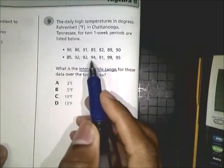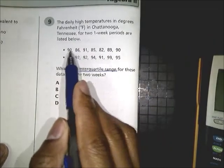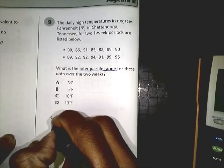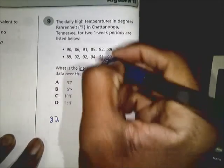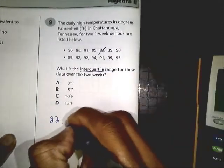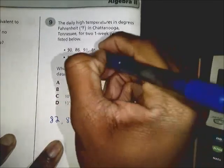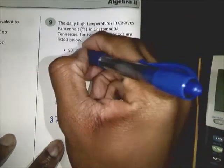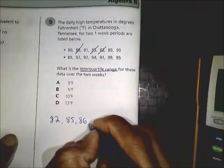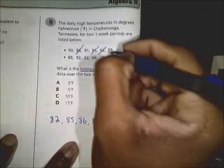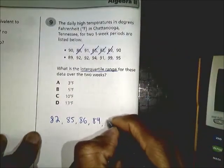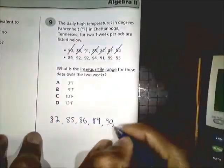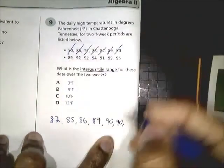Okay, so what you're first going to have to do is arrange these numbers in your first week from least to greatest. So you should have 82, 85, 86, 89, 90, 90, and then 91.